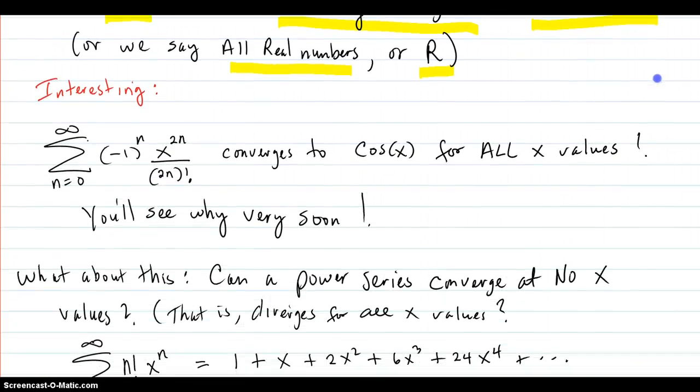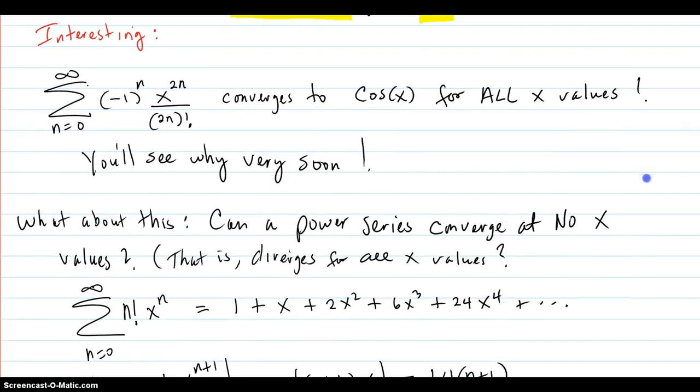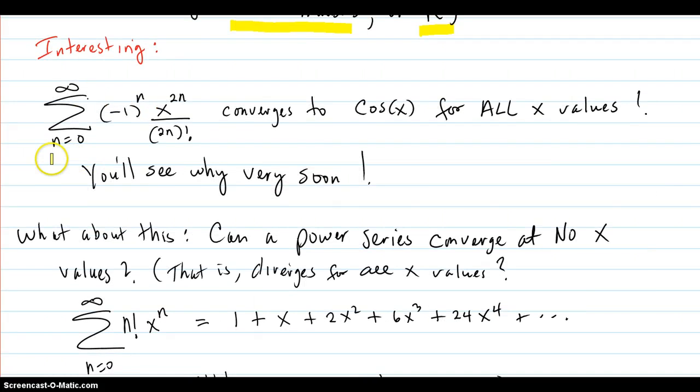So it's interesting that, and you'll see why later, that this series here, converges to cosine x for all x values. So even if your x was 20,000 pi over 3, you'd get the same value as plugging into this series if you took a far enough out n.